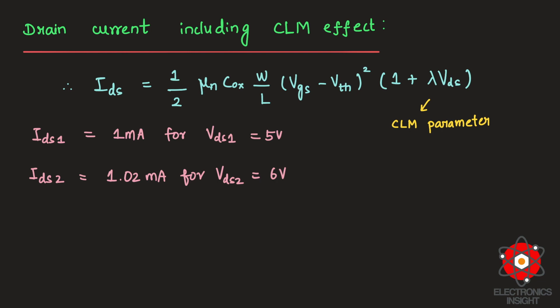Let us take the ratio between these two drain-to-source currents. IDS2 by IDS1 will be equal to—all these terms: one-half mu_n C_ox W/L (VGS - Vth)^2—will cancel out because we have considered VGS to be equal, and it is a single NMOS transistor. For a single NMOS enhancement transistor, all these parameters are fixed, so when you take the ratios they automatically cancel.